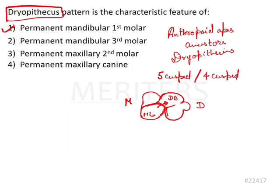The Dryopithecus pattern simply means when the mesiolingual cusp joins the distobuccal cusp going across the floor of the central groove. It is generally seen in 5-cusp lower molars, and that is why it is also known as the Y5 pattern.